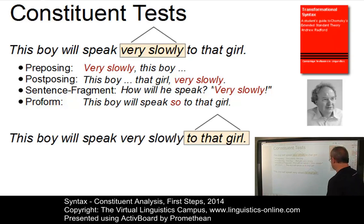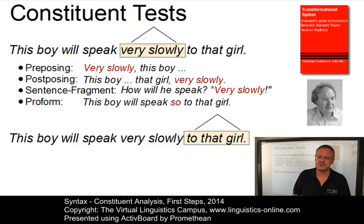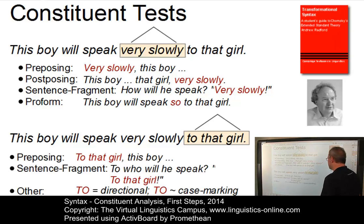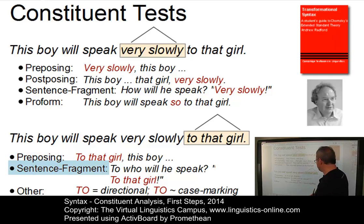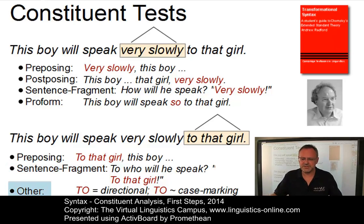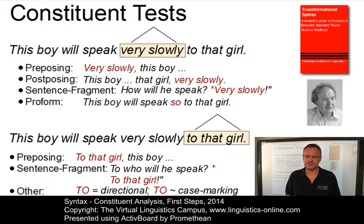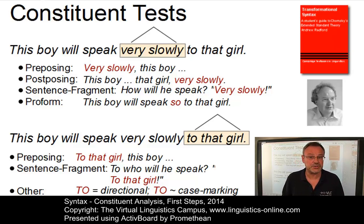Take 'to that girl' as another constituent. Even though fewer tests apply here, we have reasons to believe it is a constituent. We can pre-pose it: 'To that girl, this boy will speak very slowly.' We can use it as a sentence fragment: 'To who will he speak? To that girl.' There are also semantic tests — 'to' is directional and in many languages assigns a particular case to other constituents. With constituent tests of this kind, we can justify the hierarchical organization of sentences. This method is referred to as constituent analysis.